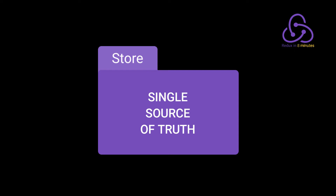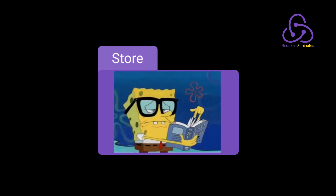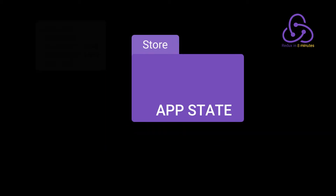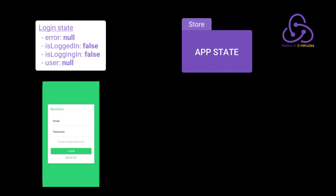With this we have what's called a single source of truth. Want to know something about the app? Just ask the store. Let's imagine we are in our app's login page and this page has access to the store. What's happening here is that our login page is keeping an eye on the state, reacting to those state changes and doing what it has to do based on the current state.